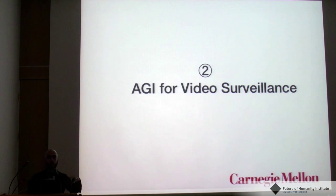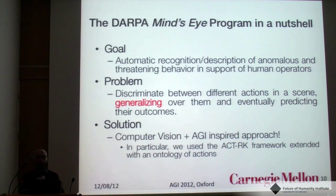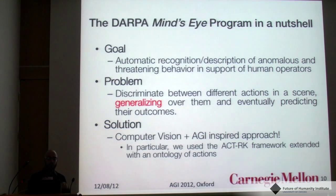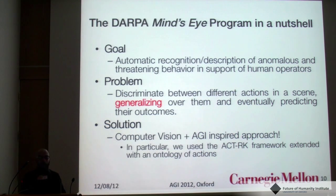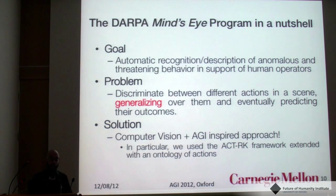We developed this framework to solve a specific problem: discriminating between different actions in a scene, generalizing over them, and eventually predicting their outcomes. The scenario is a DARPA program called MindZight, and the goal is the automatic recognition and description of anomalous or threatening behavior in support of human operators. The solution combines state-of-the-art computer vision algorithms with an AGI-inspired approach, combining cognitive capabilities with knowledge resources — in particular an ontology of actions to represent the actions detected from the environment.